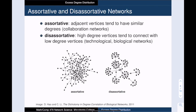Assortative networks include collaboration networks like co-authorship or co-starring in movies. And disassortative networks include technological and biological networks such as the World Wide Web and protein-protein interaction networks.